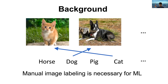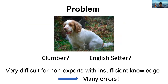Manual image labeling is necessary for machine learning, however it is a label-intensive process, and projects often recruit non-expert annotators to do it. Image labeling by non-experts can be very difficult, such as selecting the correct breed label for a dog image, and it may contain many errors because non-experts have insufficient domain knowledge.